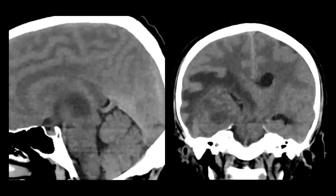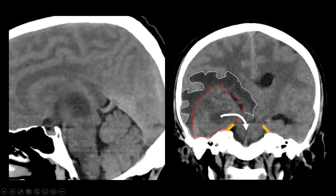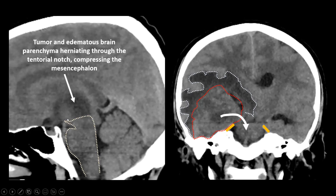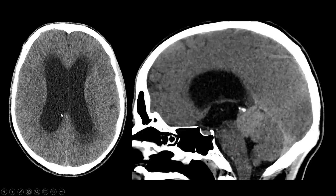In the coronal plane we clearly see the brain tumour surrounded by oedema, and the tentorium cerebelli — brain tissue is herniating above the tentorium through the tentorial notch and compressing the brain stem. On sagittal images, where you should see the mesencephalon and third ventricle above it, instead we see oedematous brain tissue and tumour that have herniated through the tentorial notch, compressing the mesencephalon — another example of transtentorial herniation.